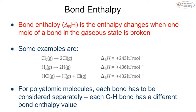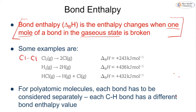Bond enthalpy is the enthalpy change when one mole of a bond is broken, and the species must be in the gaseous state. This is a definition you need to know. For example, breaking the Cl–Cl bond requires 243 kJ/mol, breaking the H–H bond requires 436 kJ/mol, and breaking the H–Cl bond requires 432 kJ/mol.